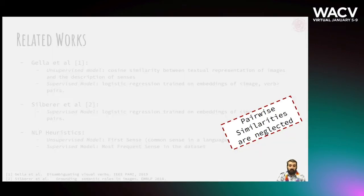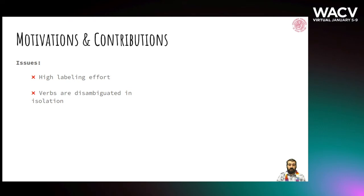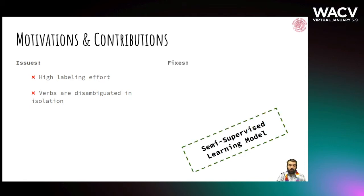Being inductive means that once the model is learned, the disambiguation operation is performed in isolation for each image-verb pair, neglecting the similarities between the sample and the dataset that might be useful to fully disambiguate verbs. Looking at what has been done so far, we found two main issues: a high cost when annotating such a dataset, and that the verbs are disambiguated in isolation without taking into account potential similarities with other samples. To overcome both issues, we thought of using a semi-supervised transductive model.